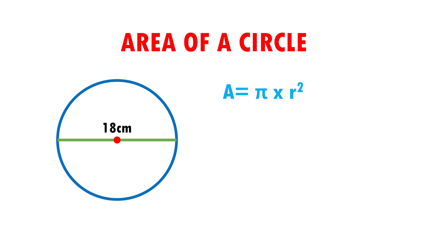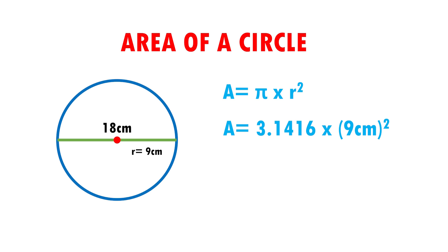Now, I am going to substitute data. This means that instead of putting the letters, I am going to put their value. A equals pi, which is worth 3.1416, and the radius. In this case, it gave me the diameter, and half of it is the radius. Half of 18 is 9 centimeters. I put 9 centimeters squared because the formula tells me so.